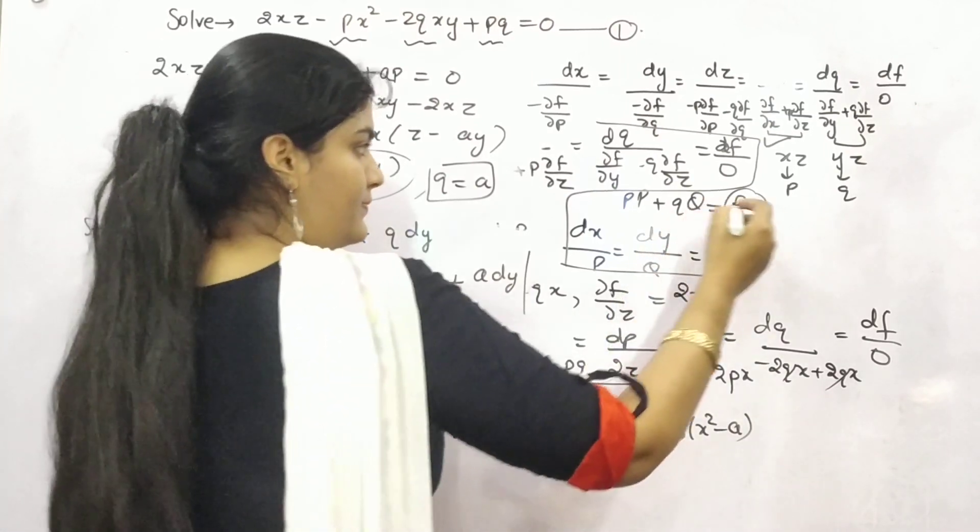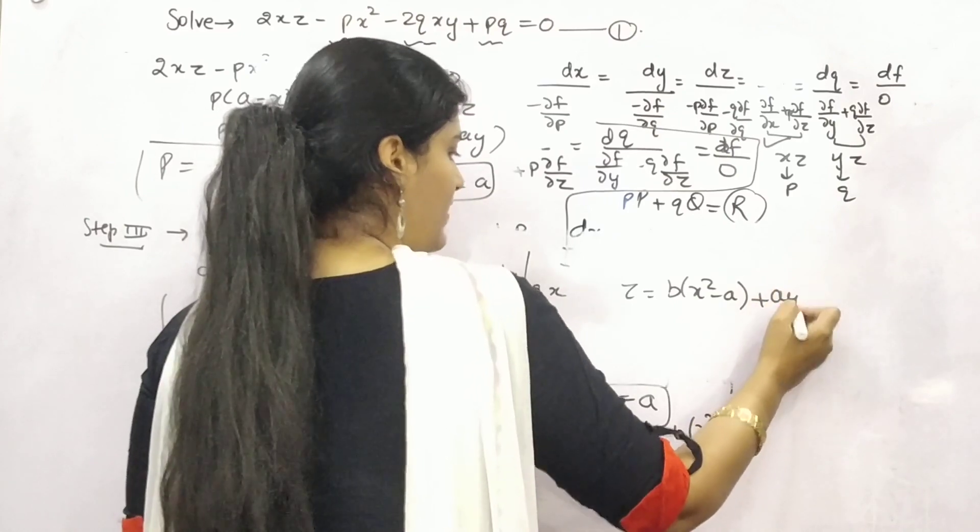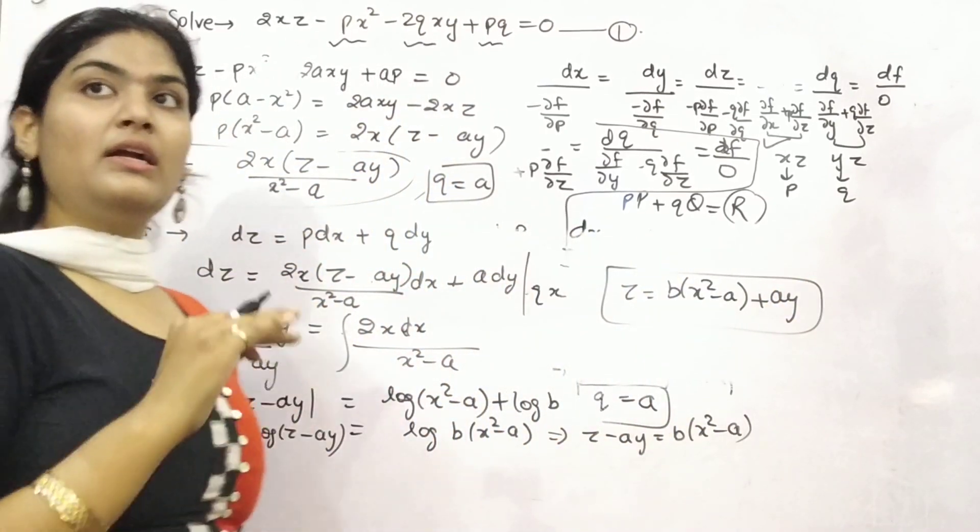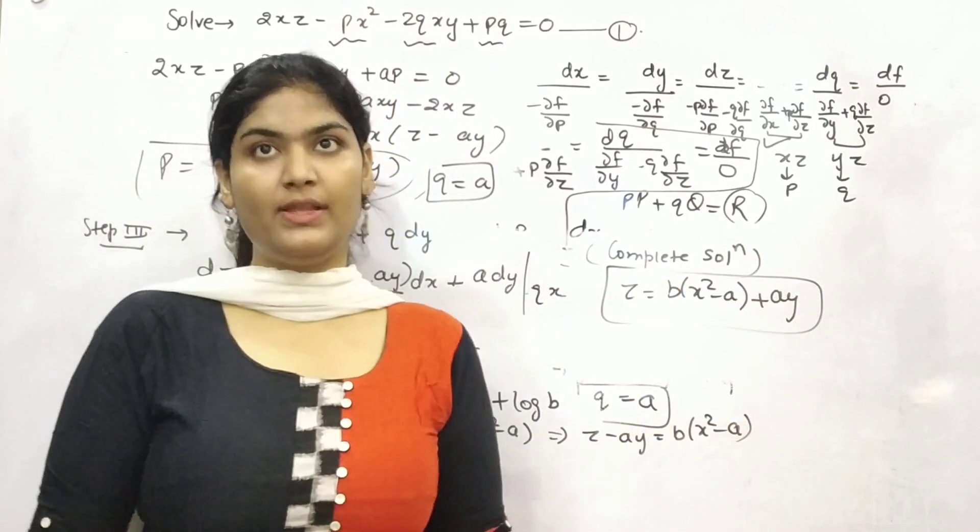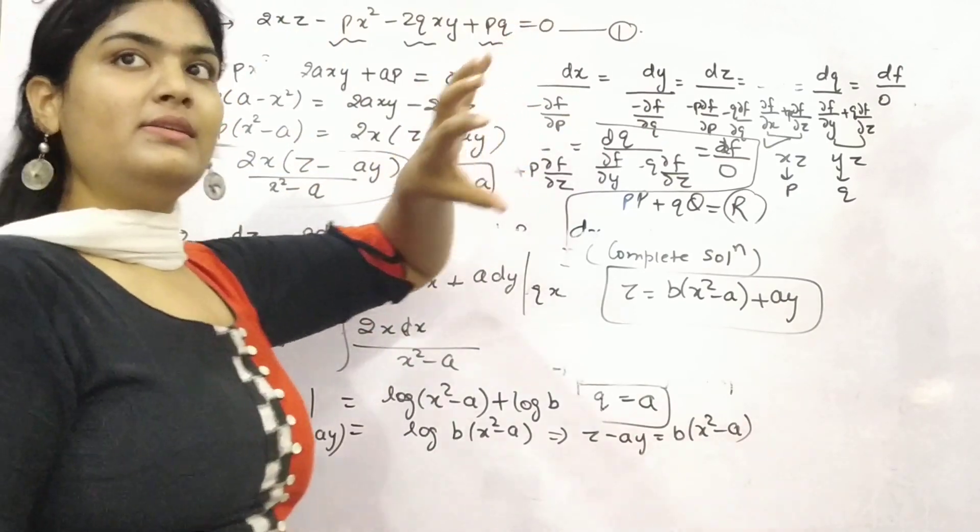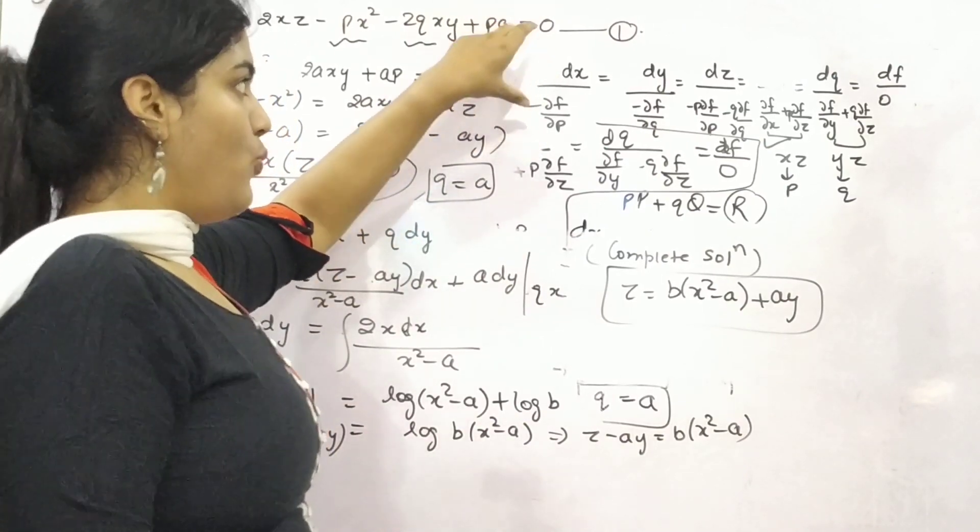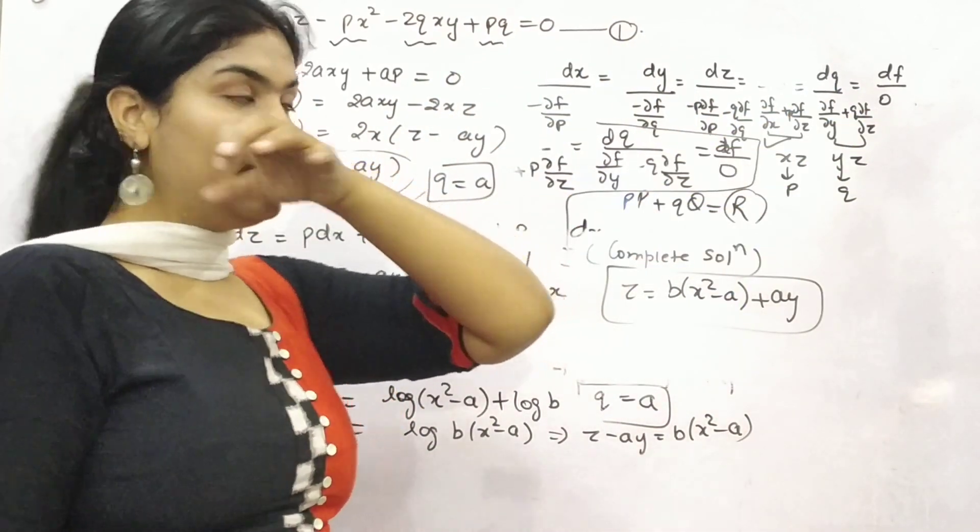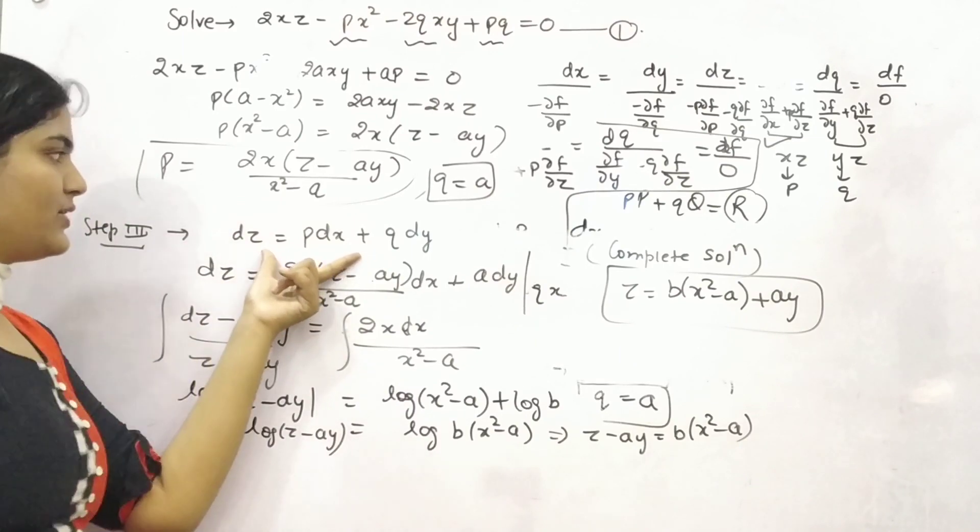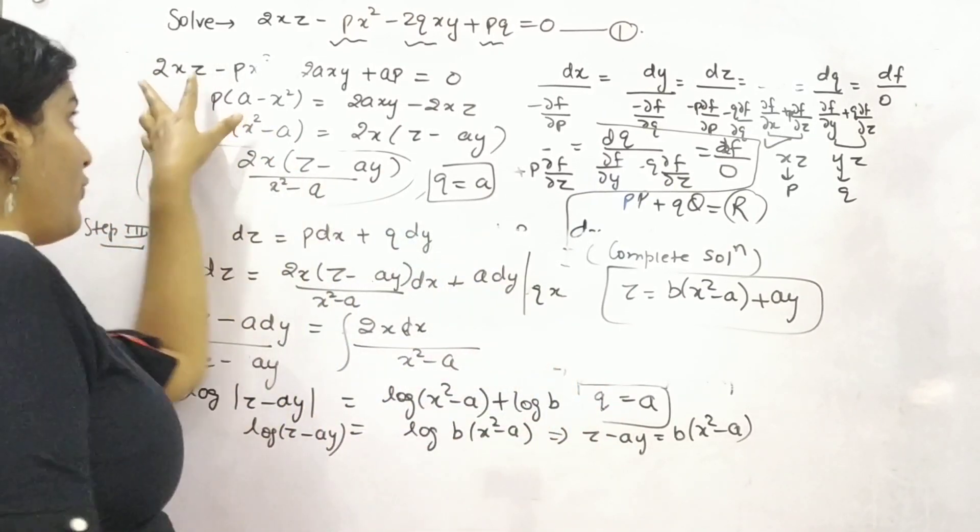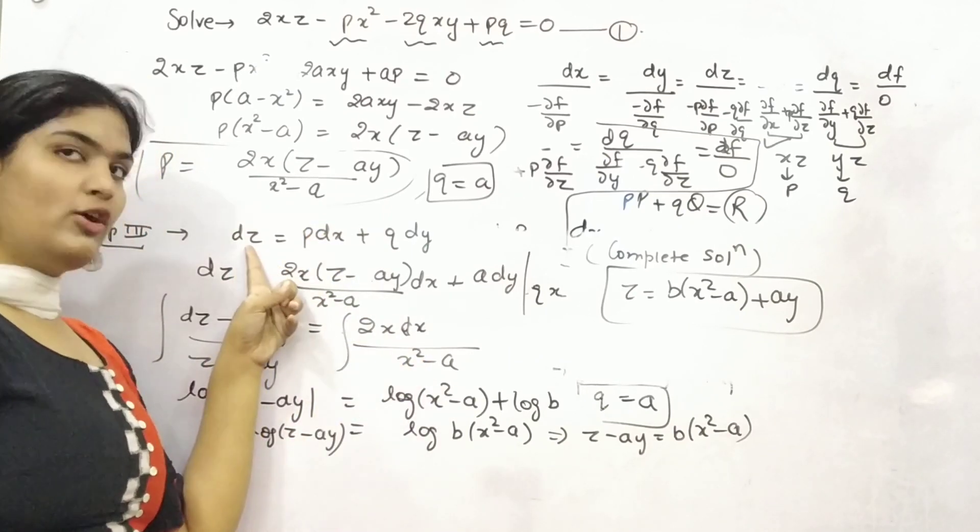So, this is your complete solution. Now, this is your complete solution. So, let me recapitulate everything. For Charpitt's method, the standard form, the simplified form, you need to take as this. The equation, auxiliary equation, this. Once you will learn this by tricks or anything. Thereafter, in step number 2, find out the value of p and q. And then this is the standard form of the equation of function, dz is equal to p dx q dy. For the function in the form of x, y, z, p, q. Once you will solve this, you will get the value of z, and that will be your complete function.